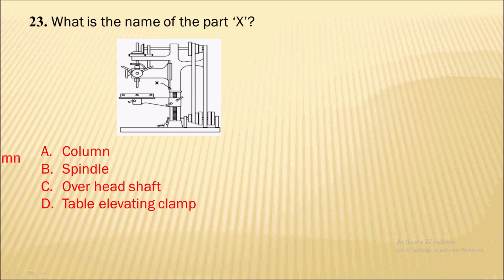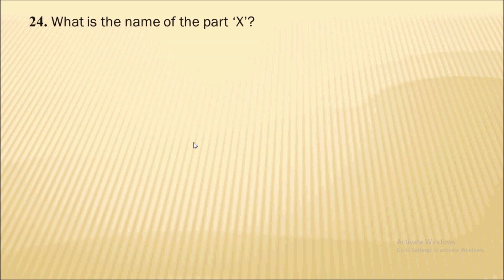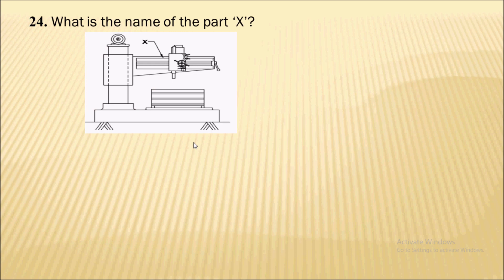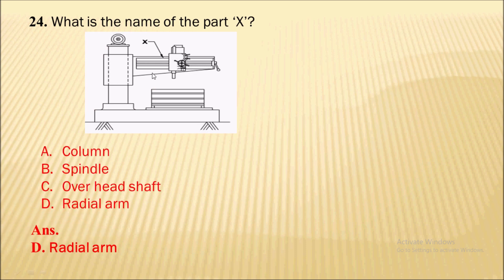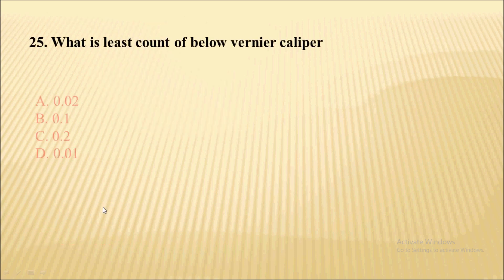What is the name of part X? This part is called the column of the milling machine. Next: what is the name of part X in this drilling machine? It is called the radial arm.